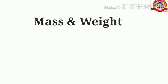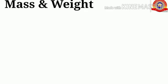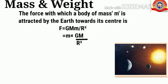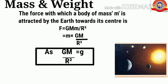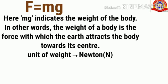Now let's study about mass and weight. The force with which a body of mass m is attracted by the earth towards its center is F = GMm/r², where G is the gravitational constant, M is the mass of the earth, m is the mass of the object, and r is the radius of the earth. Since GM/r² = g (acceleration due to gravity), this equation becomes F = mg.